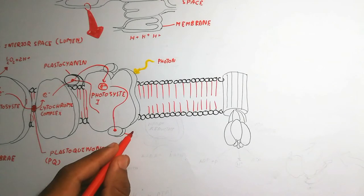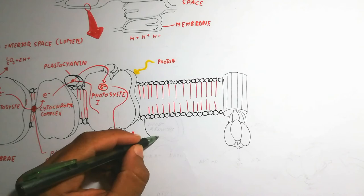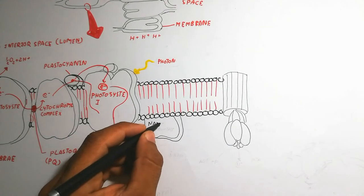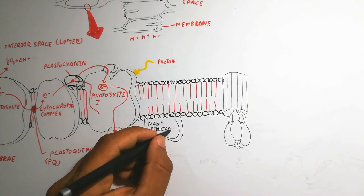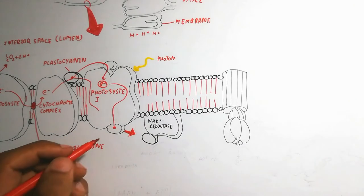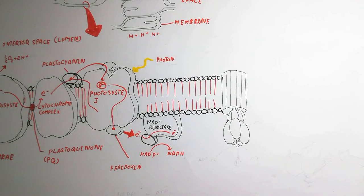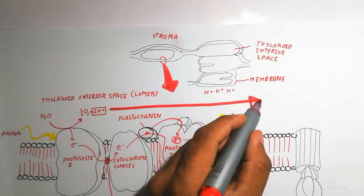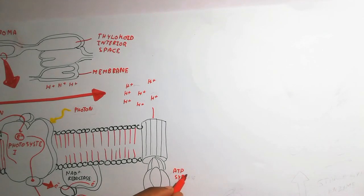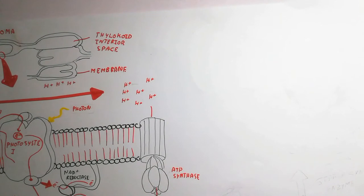The electrons then reach NADP reductase, which reduces NADP⁺ to NADPH. NADPH is the proton donor involved in the Calvin cycle. ATP is also produced here. On the outer side of the thylakoid membrane, protons flow through the ATP synthase channel back into the stroma, driving the conversion of ADP plus inorganic phosphate to ATP.